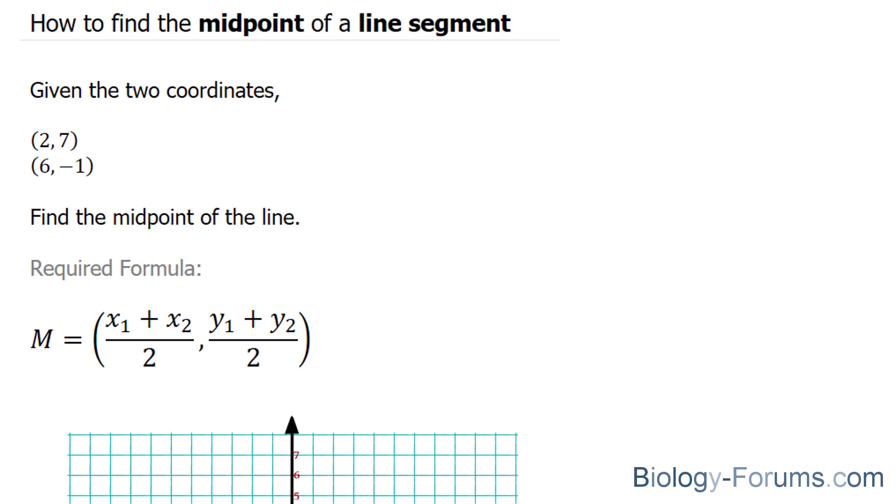We are given coordinates to two points. One coordinate is at 2 and 7, and the other coordinate is at 6 and negative 1.